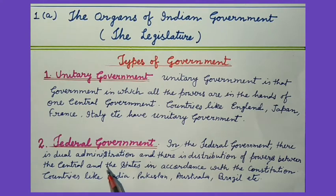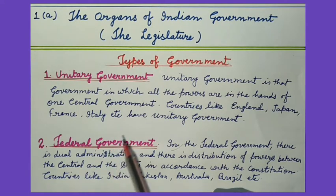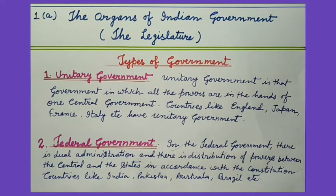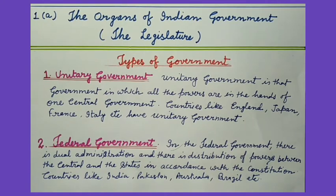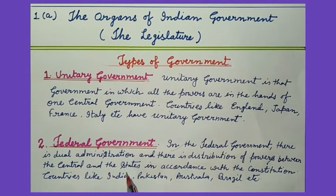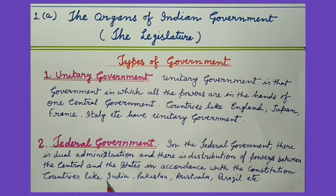The central government can decrease or increase their powers. Countries like England, Japan, France, and Italy have unitary governments. In the federal government, there is dual administration and there is a distribution of power.